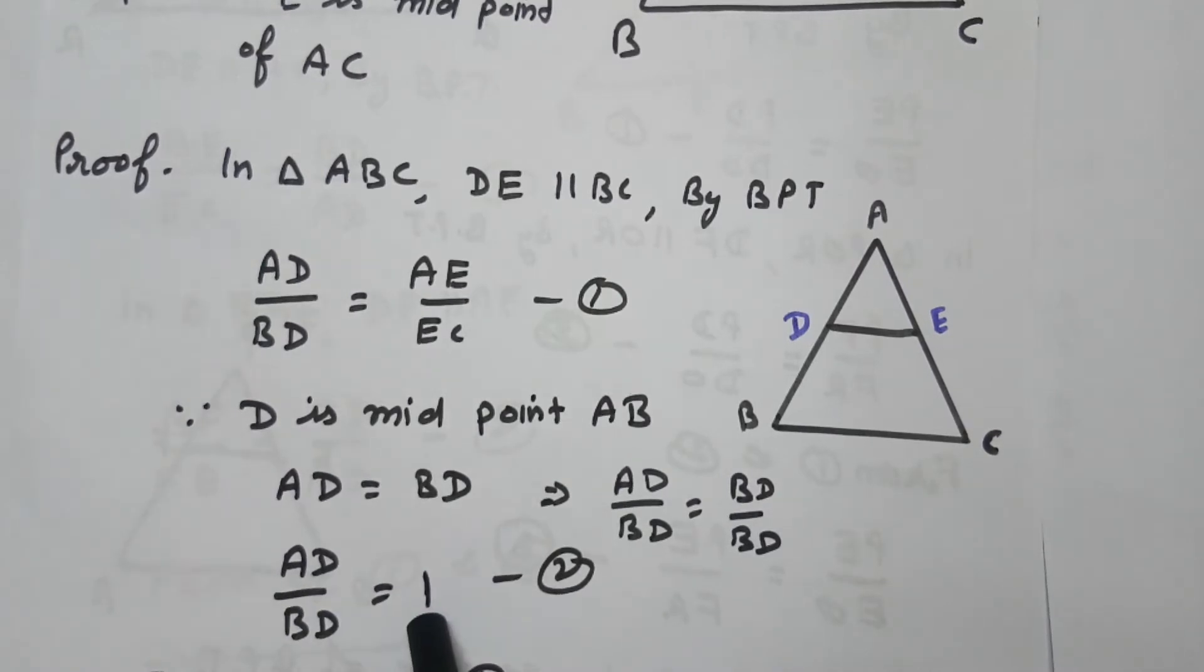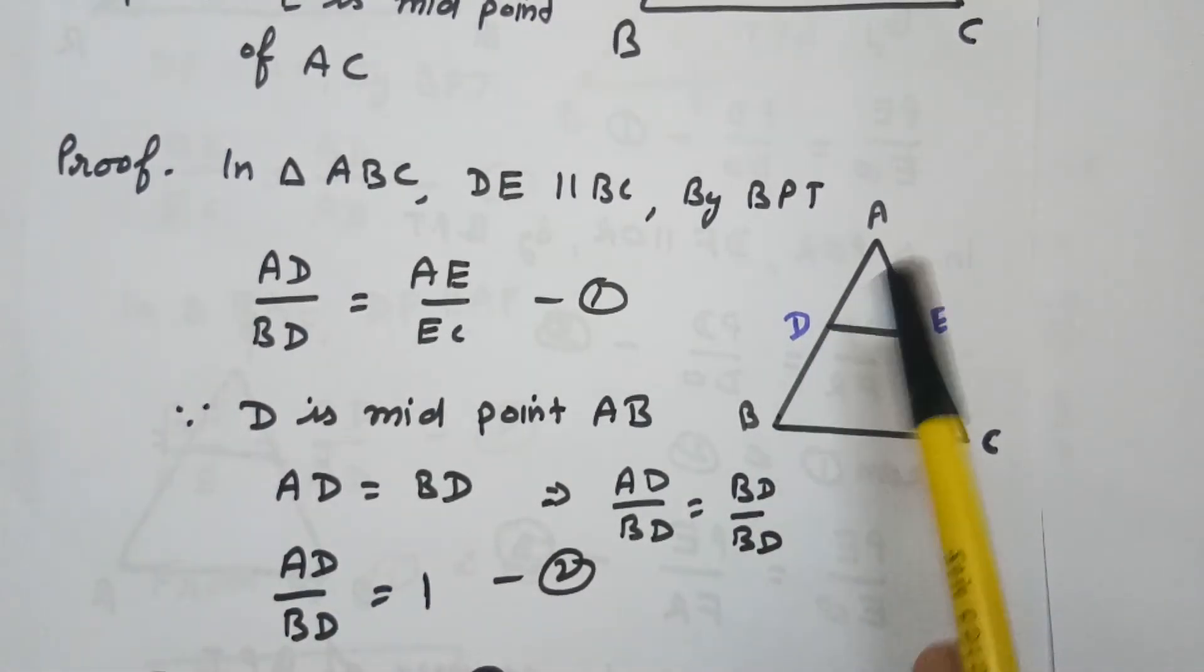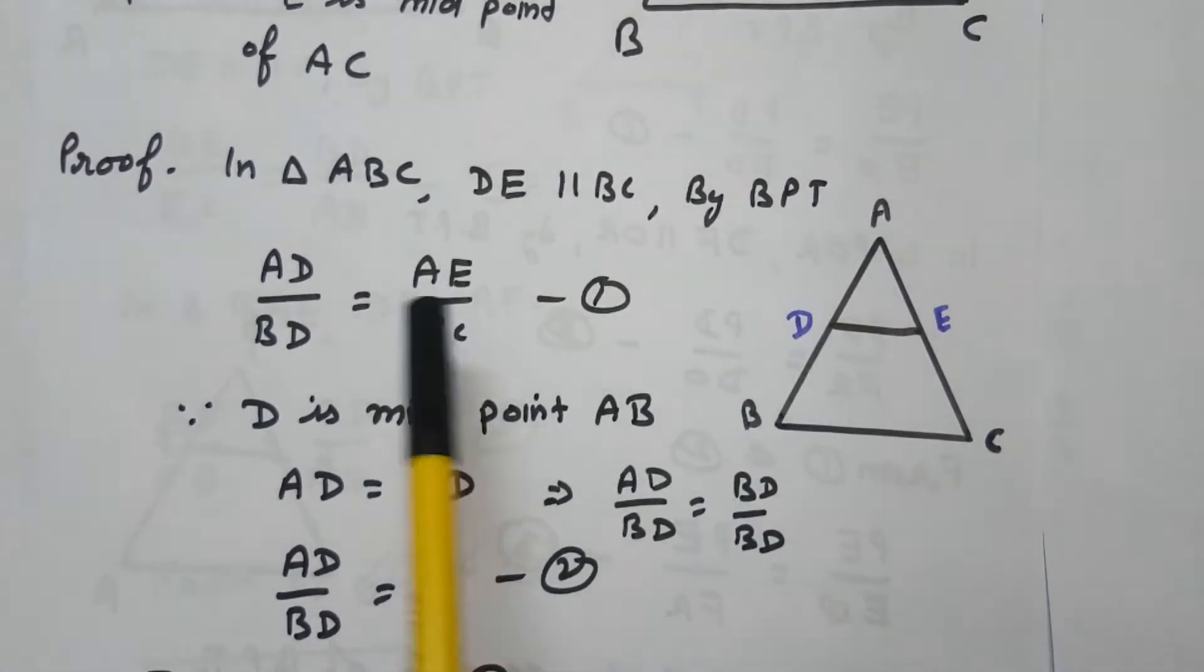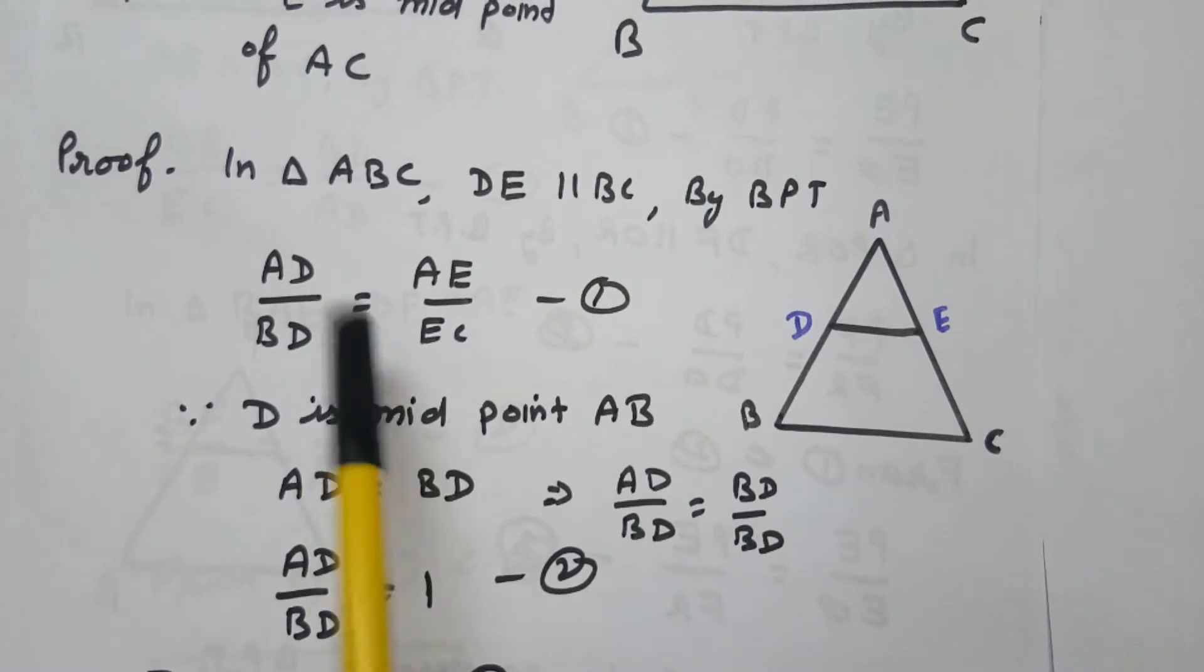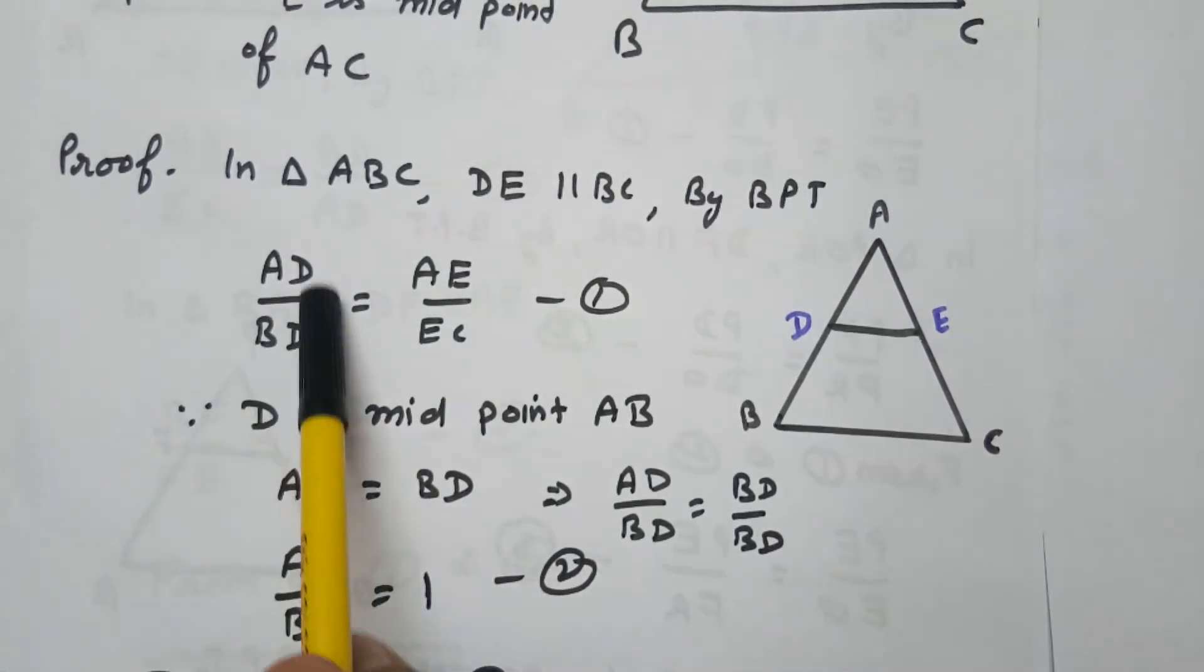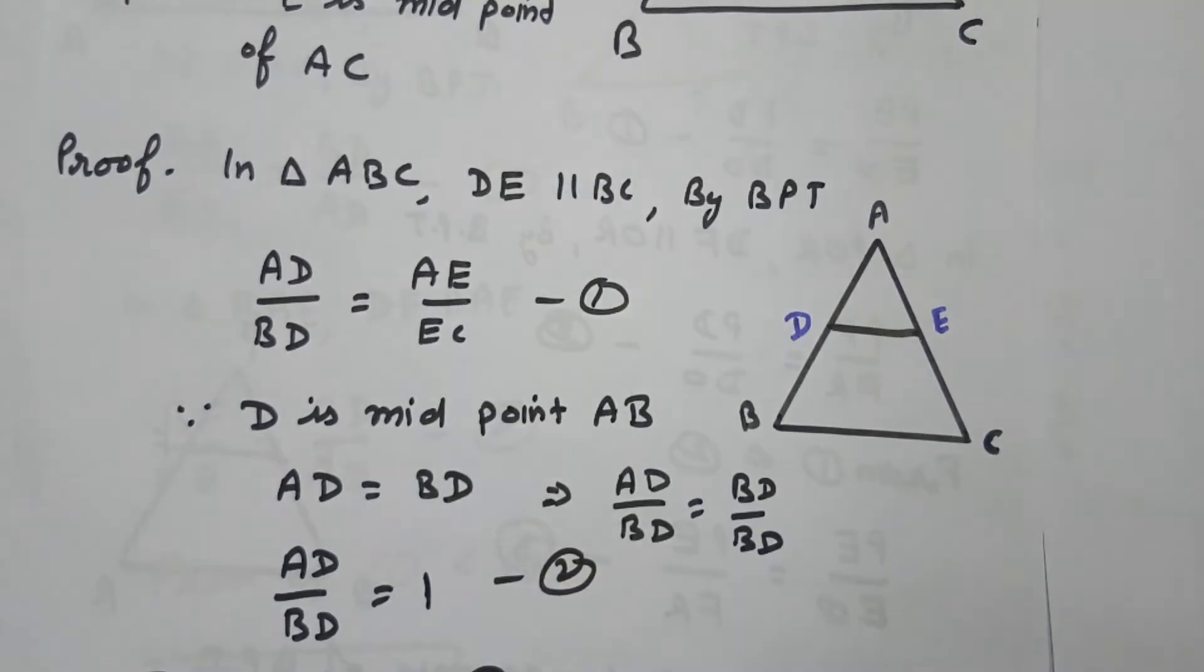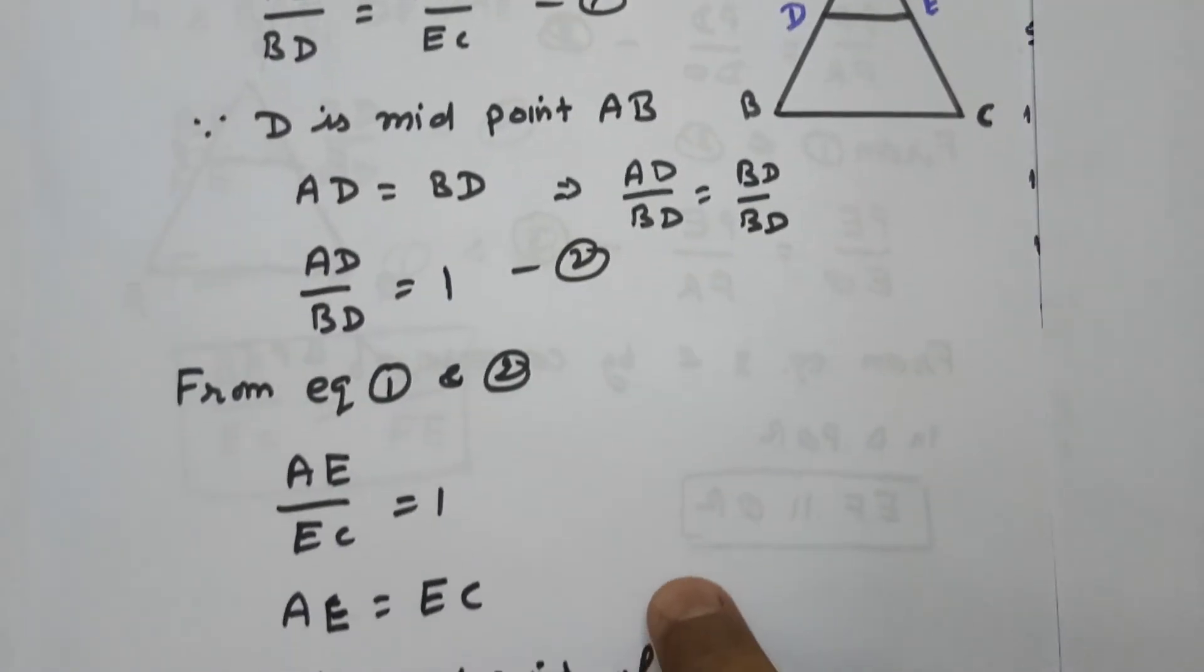The ratio of this side AD over BD equals to 1. Now we will substitute this value AD over BD in equation 1, so we will get this side reduces to 1 and we will get AE over EC equals to 1.